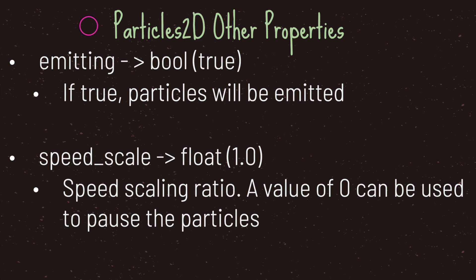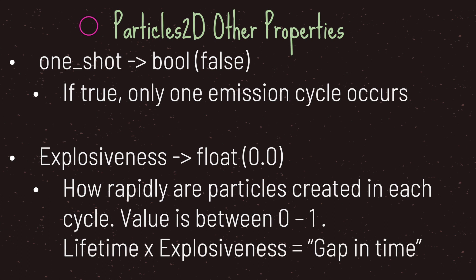The speed scale property is the speed scaling ratio, a value between zero and one. If you want to pause your particle system, you can set the speed scale value to zero. There are also properties that give an explosion effect. The one shot property, if set to true, means only one emission cycle occurs. The explosiveness property determines how rapidly your particles are created in each cycle, with a value between zero and one. Lifetime multiplied by the explosiveness value equals the gap in time you'll see before the next set of explosiveness has occurred — any value greater than zero creates a gap between each particle emission.